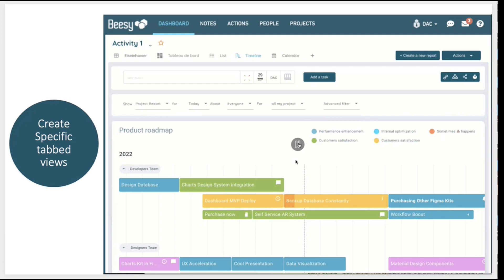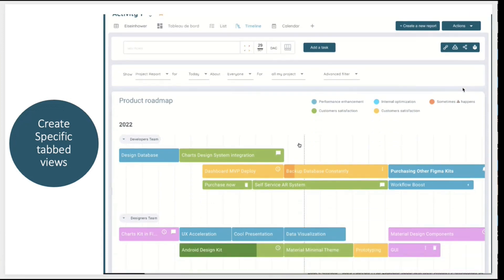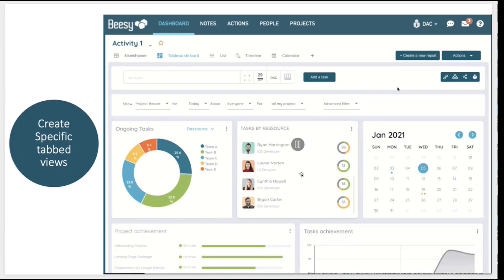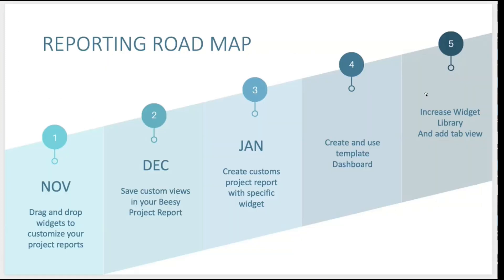You will be able to add as many tab views as you wish. This is what we're targeting — probably February, March depending on the last items. So to summarize: custom views in December, custom project reports with specific widgets in January, and the tab views and timeline/calendar views in February or March depending on how fast we go.